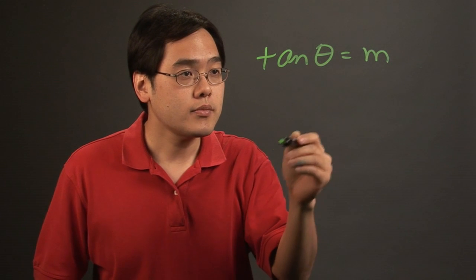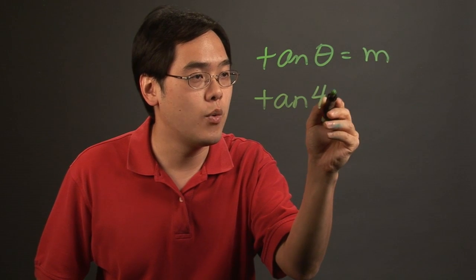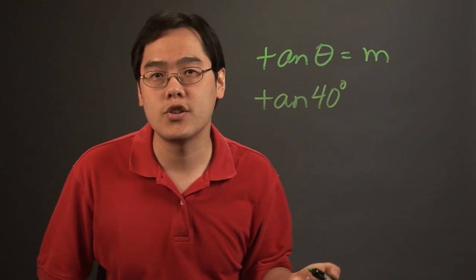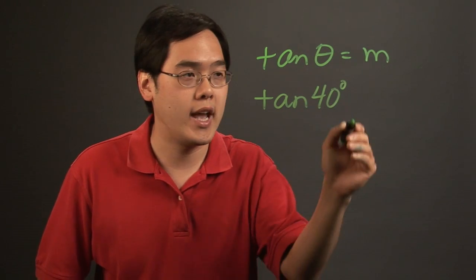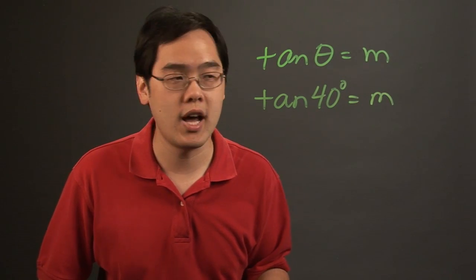So if you have tangent of, let's just say, 40 degrees, all you need to do is enter tangent 40 degrees on your calculator and that'll provide the slope of that particular line.